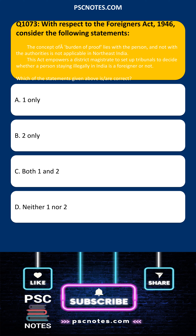With respect to the Foreigners Act, 1946, consider the following statements. Statement 1: The concept of FAA Burden of Proof lying with the person and not with the authorities is not applicable in northeast India. Statement 2: This act empowers a district magistrate to set up tribunals to decide whether a person staying illegally in India is a foreigner or not. Which of the statements given above is correct? 1. Only, 2. Only, Both 1 and 2, Neither 1 nor 2.